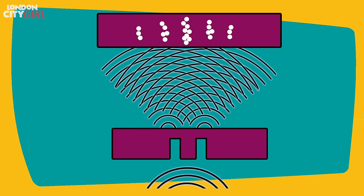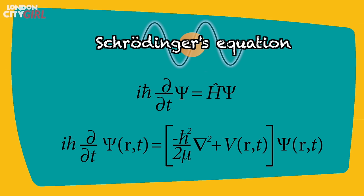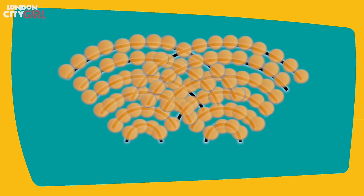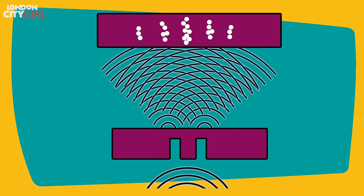Where the waves are most intense we find more of the electrons on the detector screen, and where they cancel each other out there are no electrons. Erwin Schrödinger came up with an equation for the electron's wave function, and using this equation we can find out the probability of the electron being in a particular location. Think of the wave as a bundle of probabilities — the size of the wave in any location predicts the likelihood that the electron will be found there. It seems as if the electron is not in a fixed position but has different probabilities of being in many different places at once.